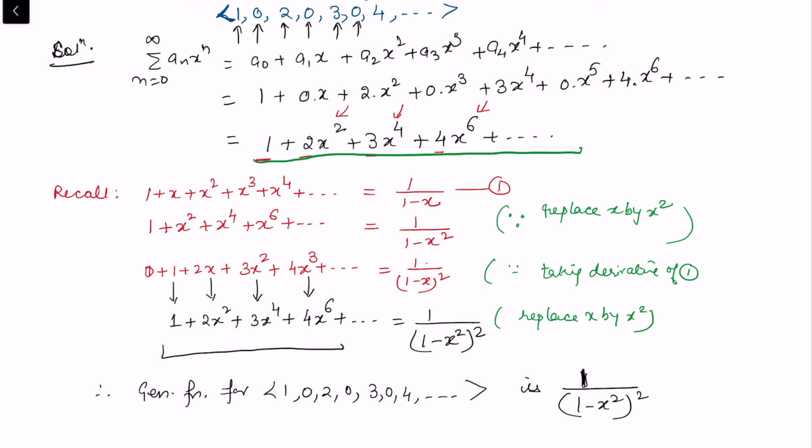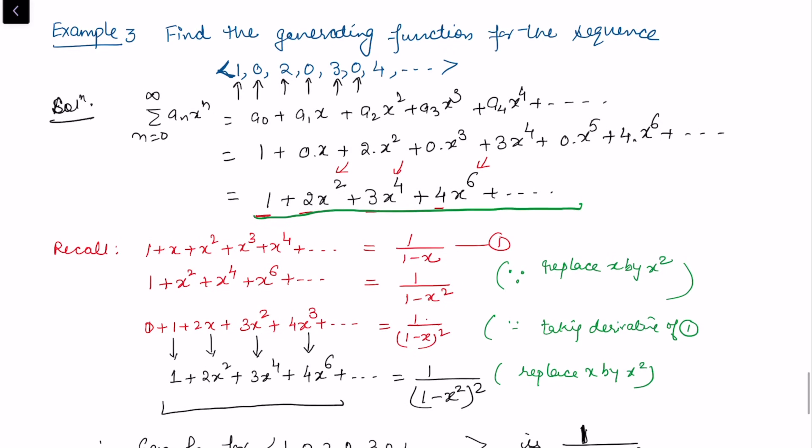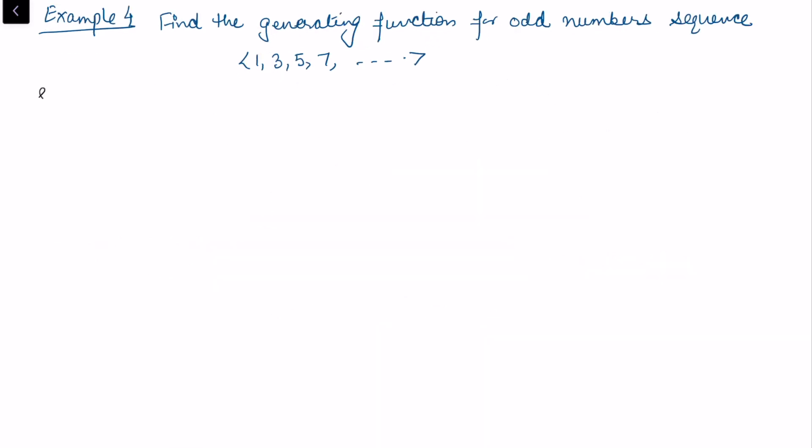We can either multiply, or take the derivative, or sometimes even integrate — depending on what the problem requires. Now let's find the generating function for the sequence of odd numbers.